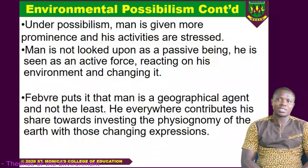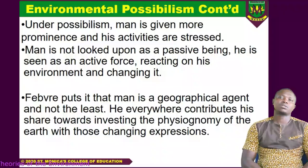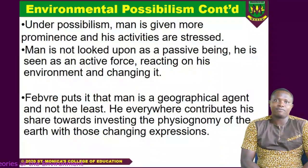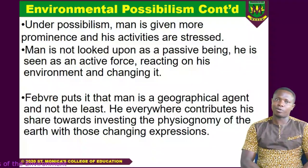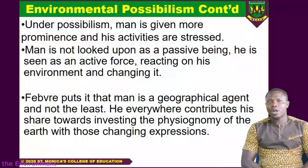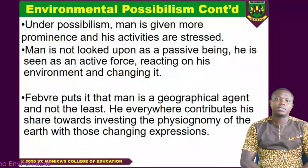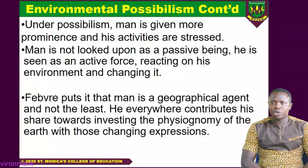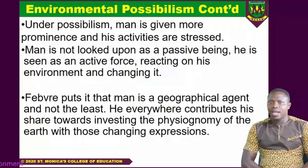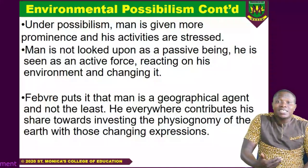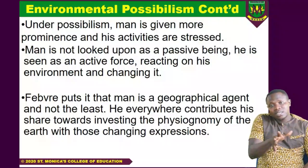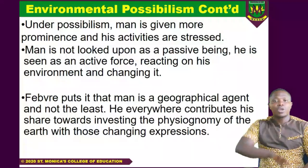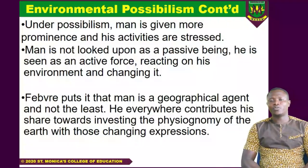Under possibilism, man is given more prominence and his activities are stressed. In possibilism thinking, you always see man taking the active path, controlling environmental issues, ensuring that he or she is trying to influence the environment to suit him or her. So man is not looked upon as a passive being — he is seen as the active force, reacting on his environment and changing it. Man is a geographical agent, and everywhere he contributes his share towards investing the physiognomy of the earth with those changing expressions. You can change the face of the earth.